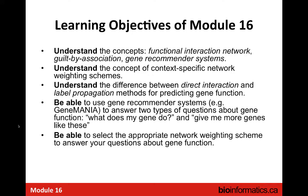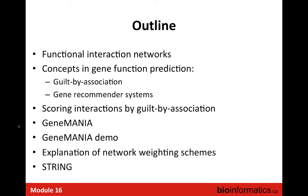When answering the question 'give me more genes like these,' we want to use the network data differently than when we ask 'what does my gene do?' You're asking about a specific type of function, and some networks might be better at inferring that function than others, so you'll want to reweight the networks. We're going to talk first about what a functional interaction network is, go over these concepts, talk about algorithms for scoring guilt by association, introduce GeneMANIA, give a demo, and then discuss network weighting schemes and the STRING interface.